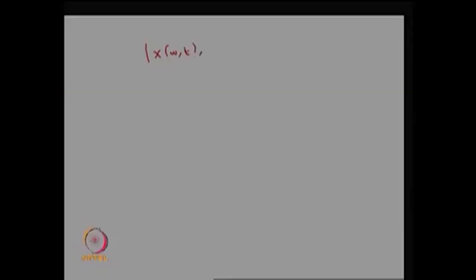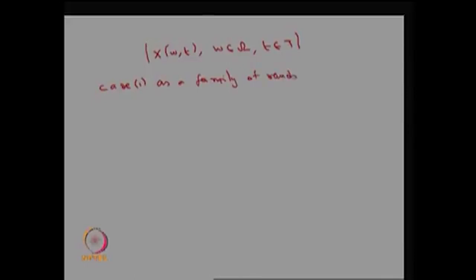Based on the values explained, the random variable or stochastic process is x(w, t), where w belongs to omega and t belongs to capital T. There are two approaches to define the stochastic process. The first one, Case 1, defines it as a collection of random variables — a family of random variables x(·, t) where t belongs to capital T.